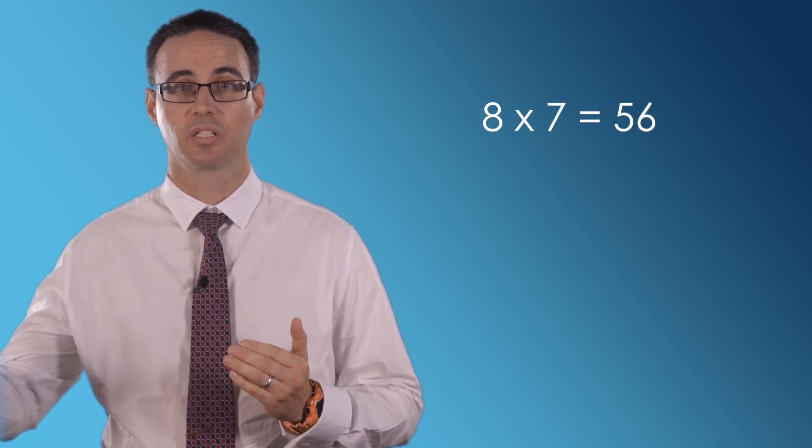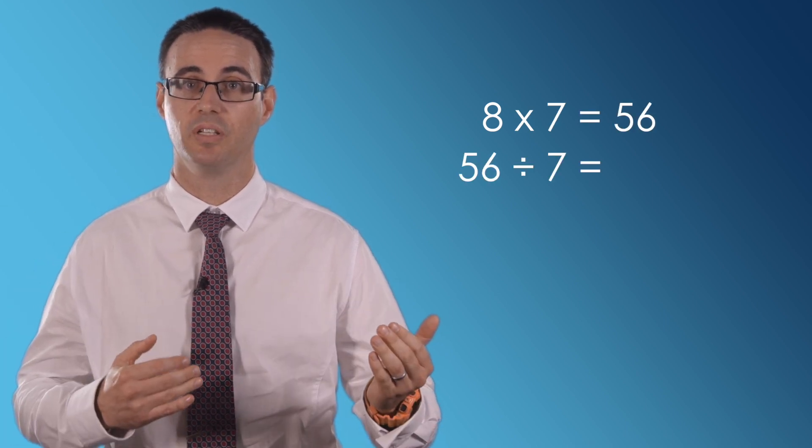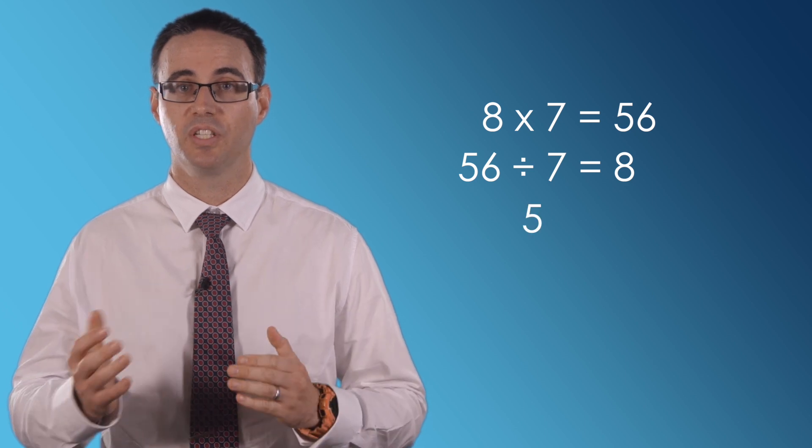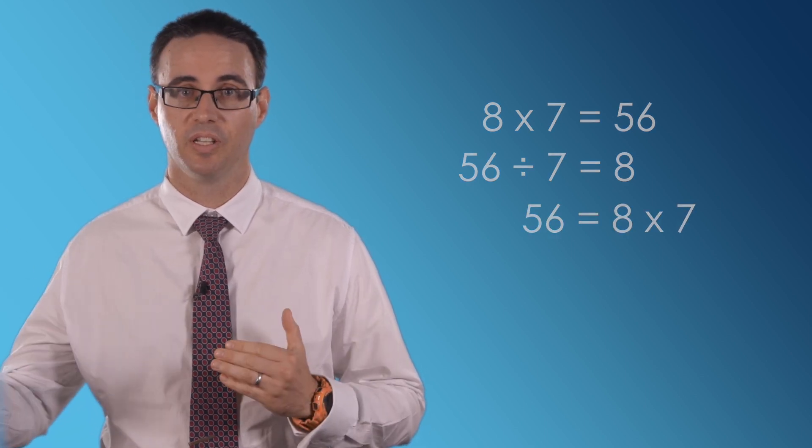For example, 8 multiplied by 7 equals 56, 56 divided by 7 equals 8, and 56 equals 8 multiplied by 7.